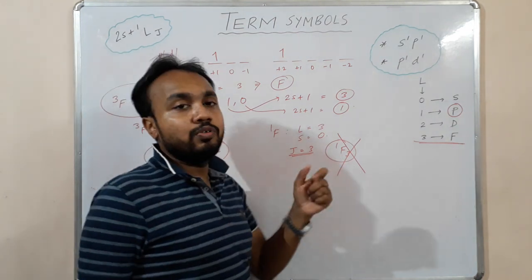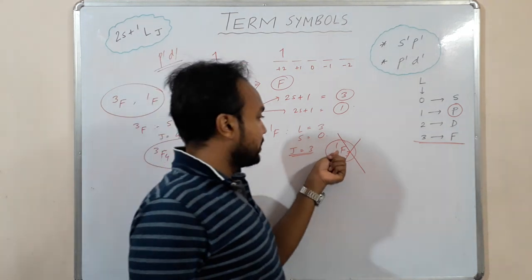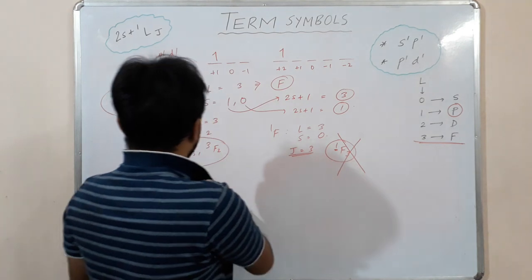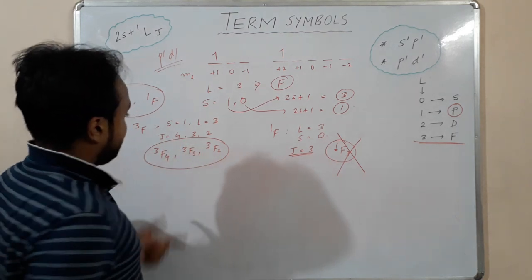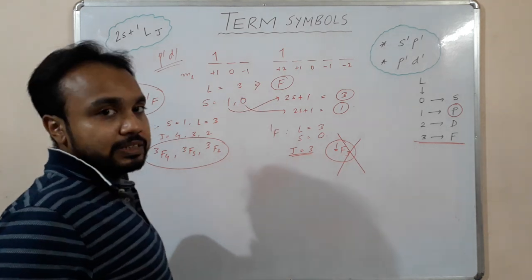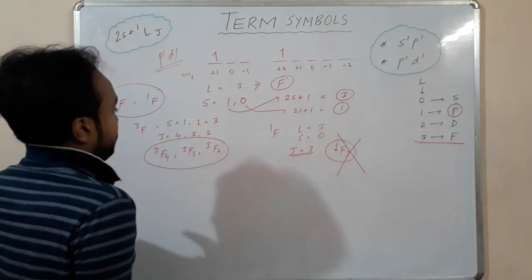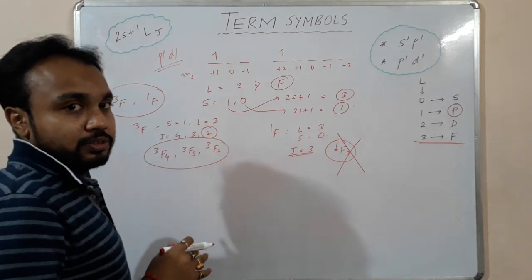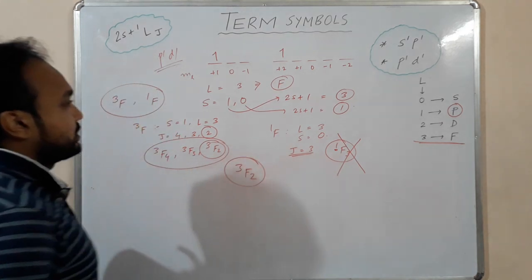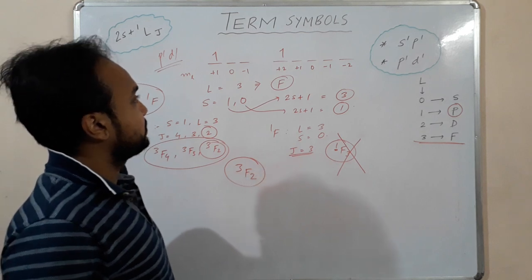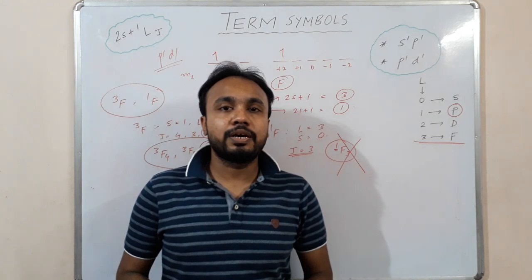As established, higher spin means lower energy. The ³F terms have 2S+1 = 3 and the ¹F term has 2S+1 = 1, so the ³F terms are lower in energy. Among the three ³F terms, this is also a less-than-half-filled system, so J = L − S = 3 − 1 = 2. The ground state term symbol for the p¹d¹ system is therefore ³F₂. This is how you solve these problems using Russell-Saunders coupling.